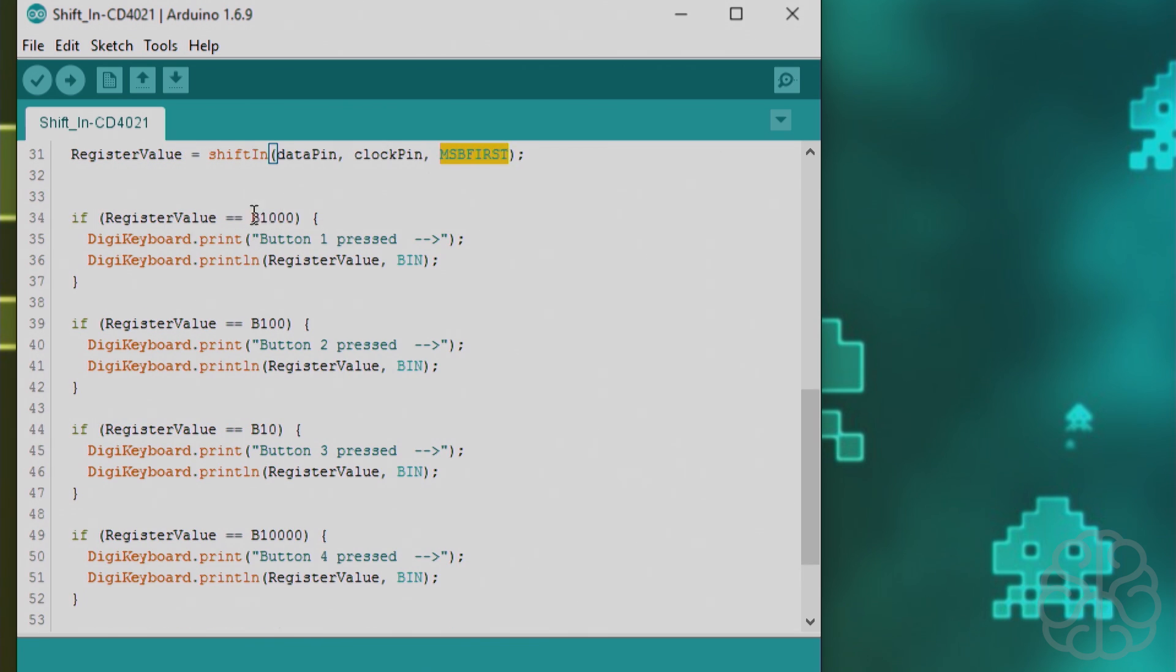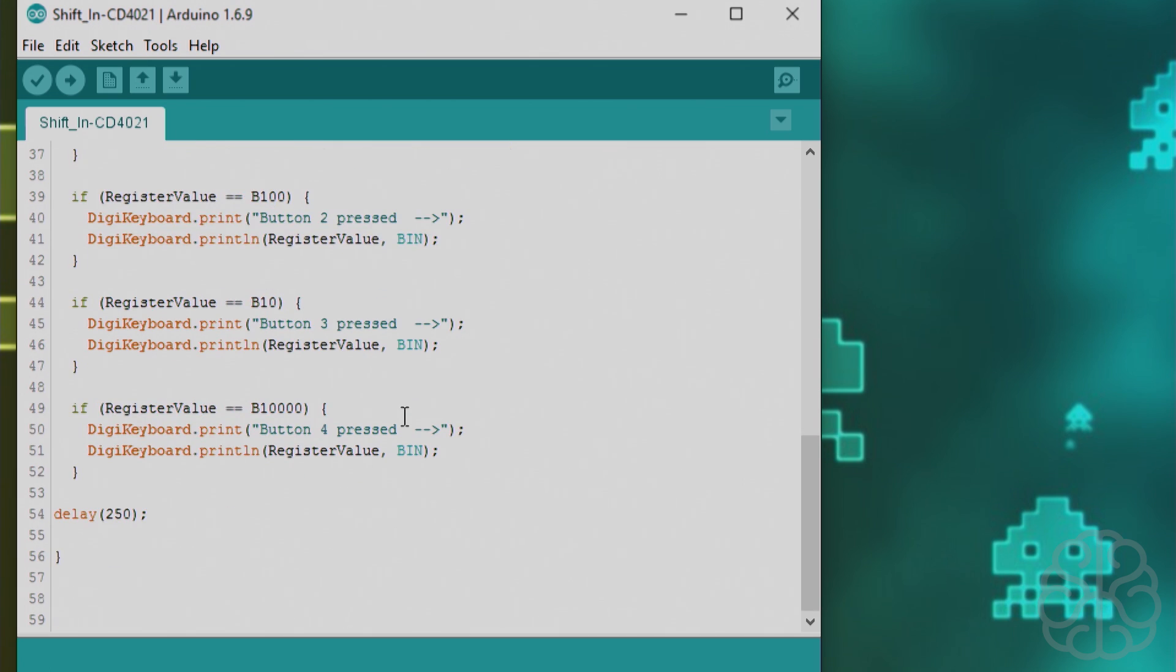Binary 1000 corresponds to button 1, so we will do DigiKeyboard.print button 1 pressed and the value in binary. That's what this library does, it emulates a keyboard. We'll see that information printed out in notepad. Same for each one of these depending on which button is pressed.